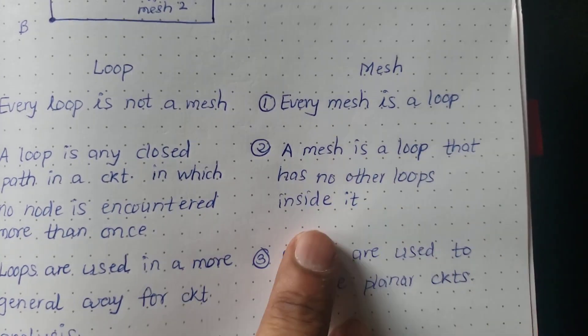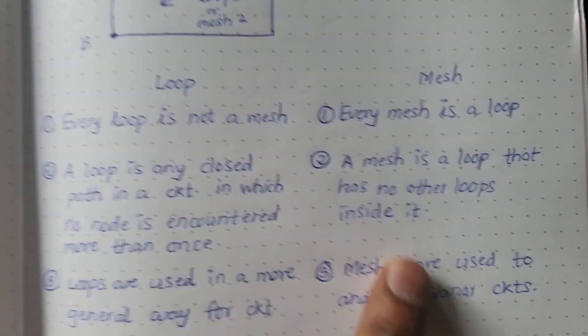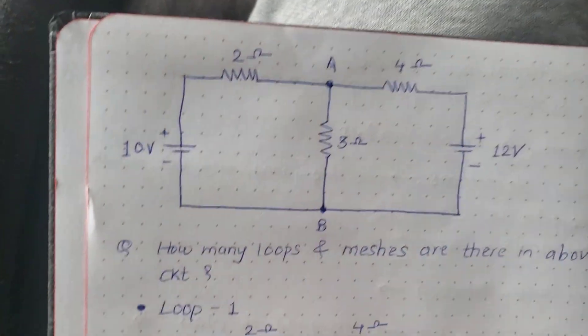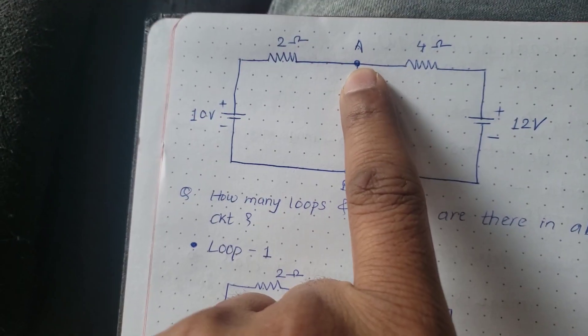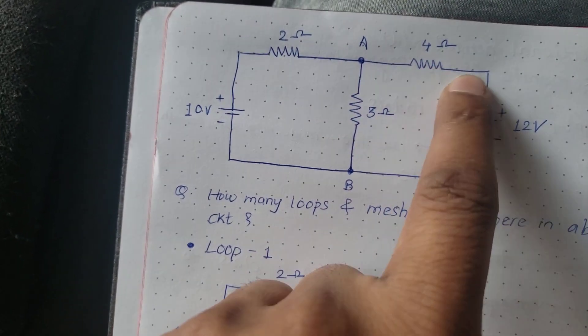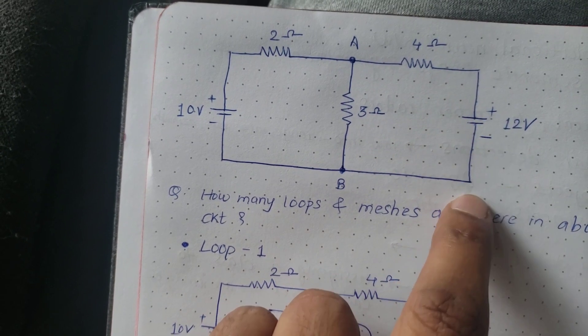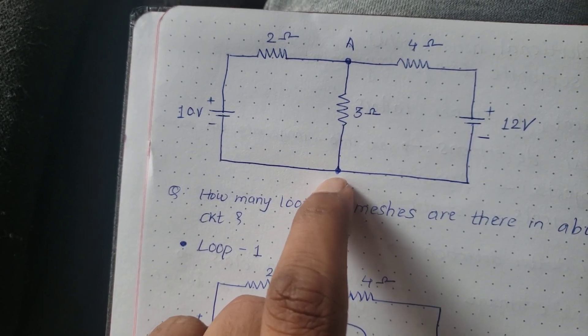That has no other loops inside it. Let me explain. Going back to the same circuit here, if I start from node A, four ohm resistance to 12 volt battery to node B, three ohm resistance.